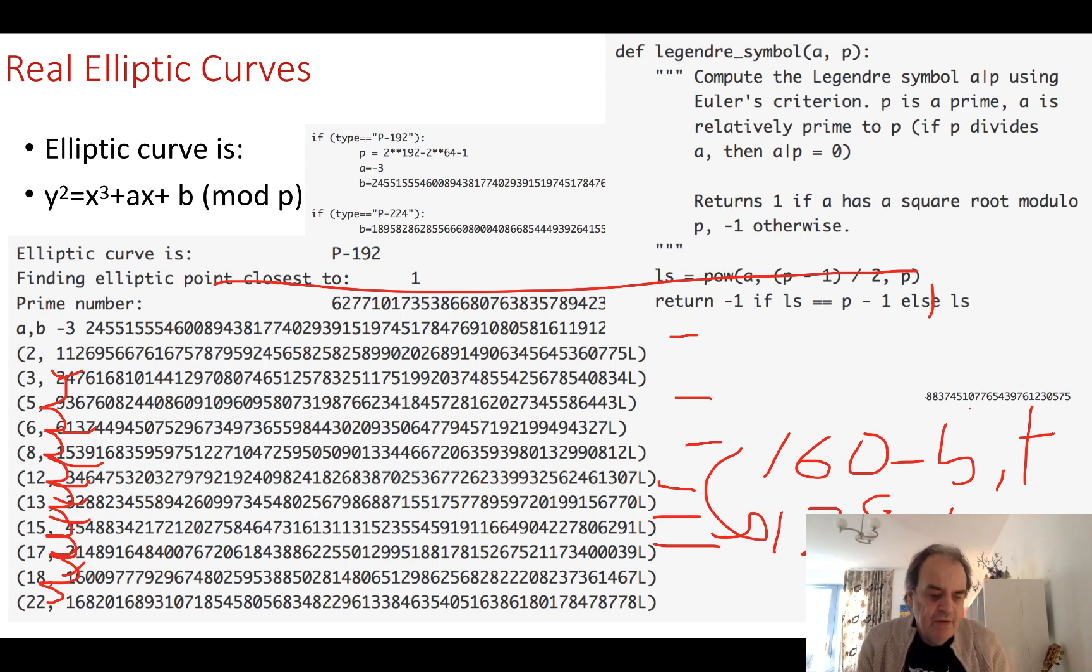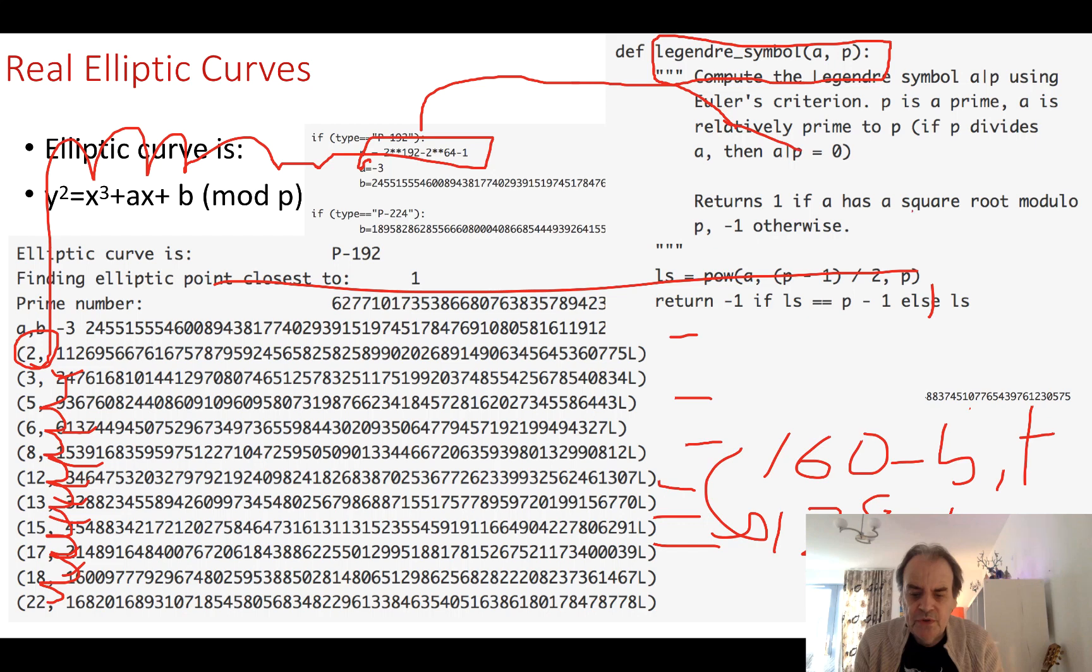The way that we actually determine if we have a point that's possible is we'll take this value and apply it, then we do our mod of our prime number. We end up with a value which will be equal to y squared. To determine if we have a root, or what's called the quadratic residue, we use this method here. This method returns a one if we have what's called the square root modulo p. If that is true, then it means we have a value which has a root which is an integer value.